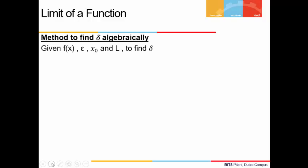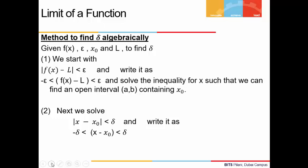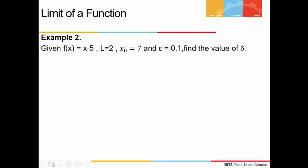Now let's say we are given f(x), epsilon, x₀, and L, and we have to find delta. We do that in two steps. First, we find |f(x) - L| < epsilon and write it as -epsilon < f(x) - L < epsilon, removing the modulus, and solve this inequality for an interval of x containing x₀ — finding the interval (a, b) containing x₀. Next, we solve |x - x₀| < delta, writing it as -delta < x - x₀ < delta, getting another interval for x. We then compare the two inequalities and find the value of delta.